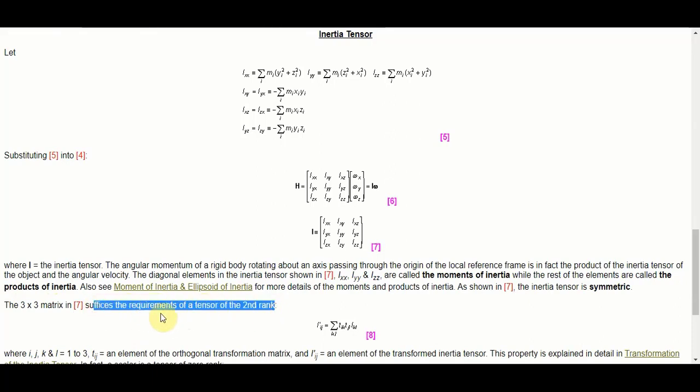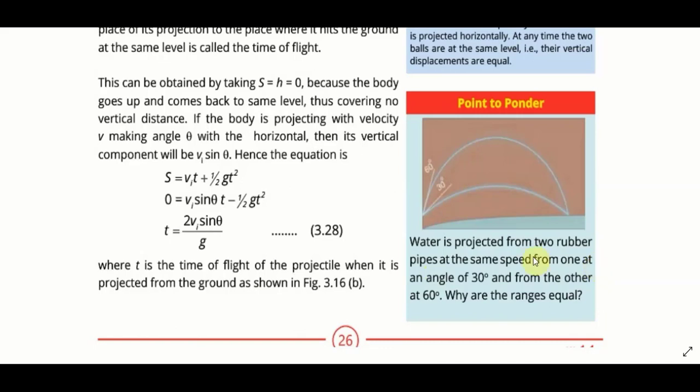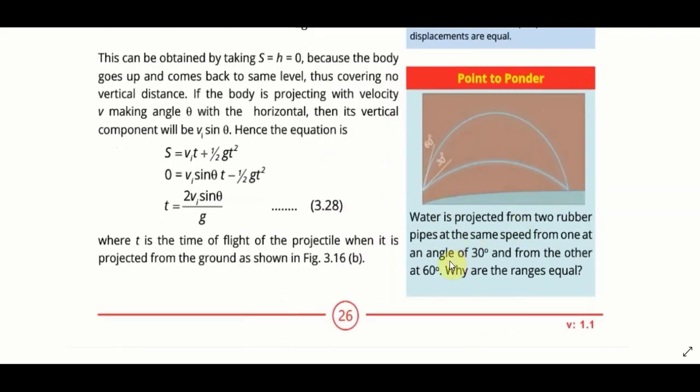The range of projectile will be same when the angle of projections are: best option is 30 and 60. In projectile motion, if you add the given options and the answer is 90, that will be the best option. If we see first year physics chapter number 3, there is a two pointer given about this MCQ explaining why the range at angles 30 and 60 is equal.